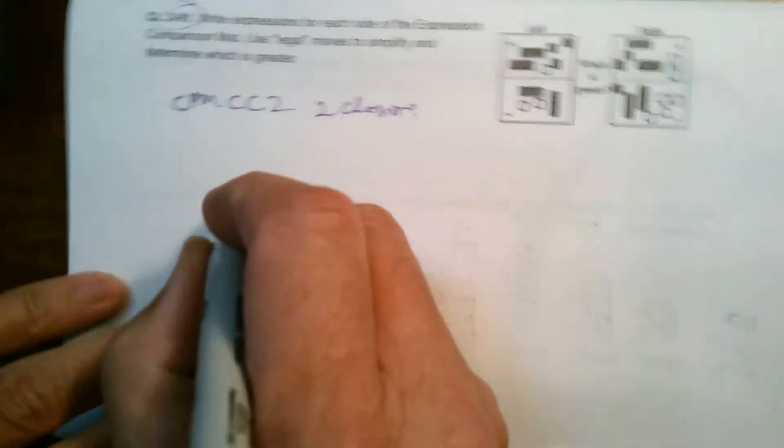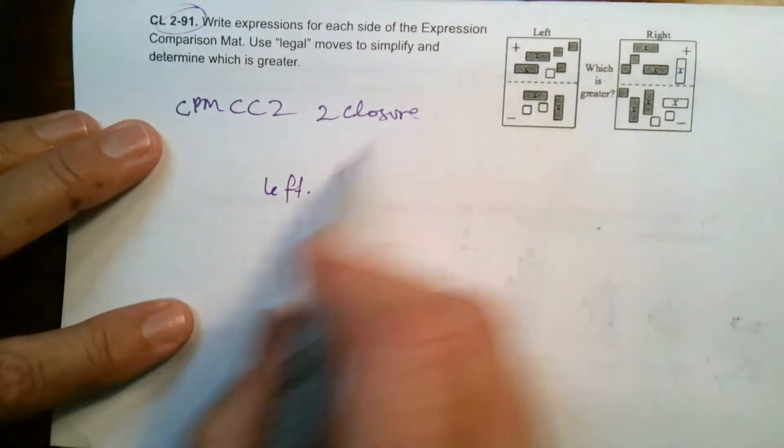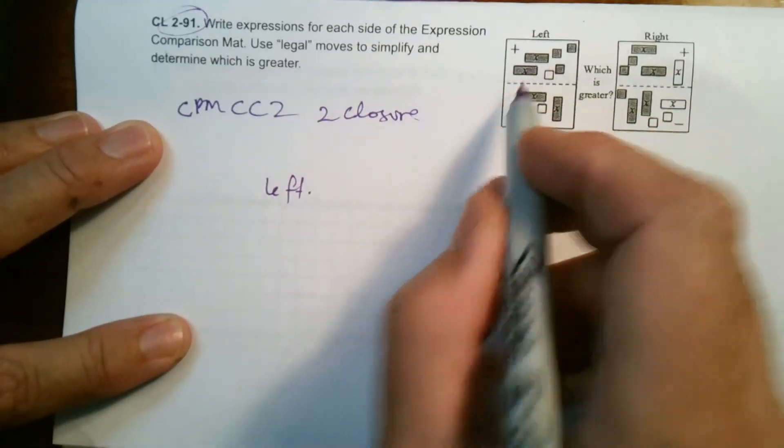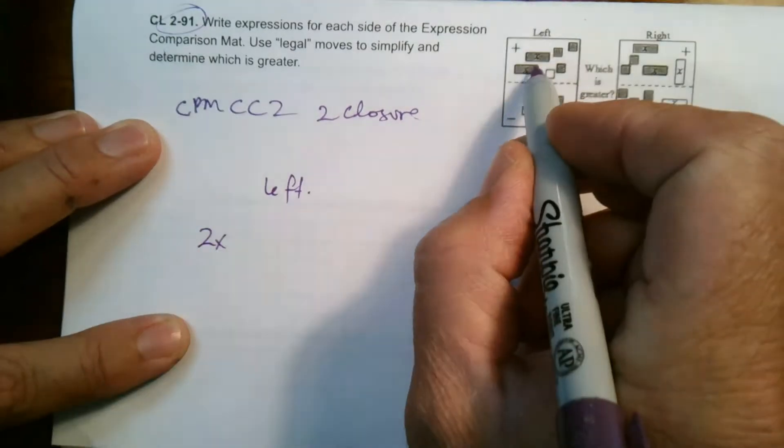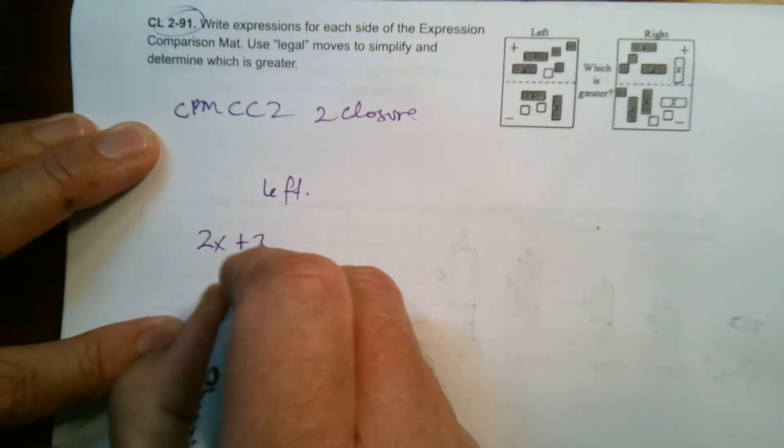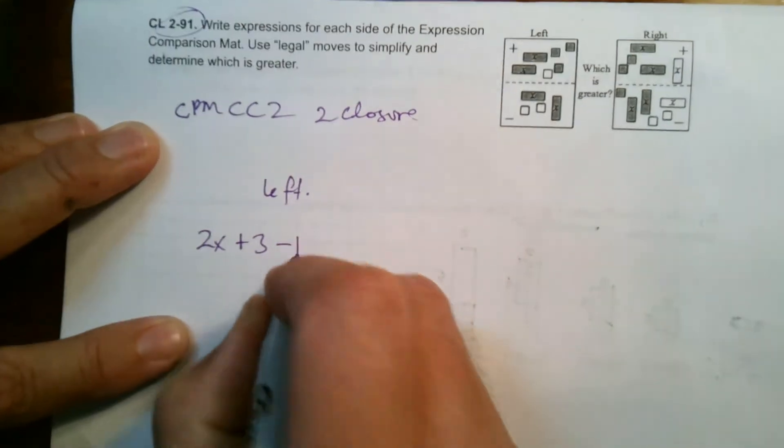So on the left side, my expression would be, if I look on top, I have two positive x's, and then I have three positive ones, so plus three, and then a negative one. So I could say minus one.